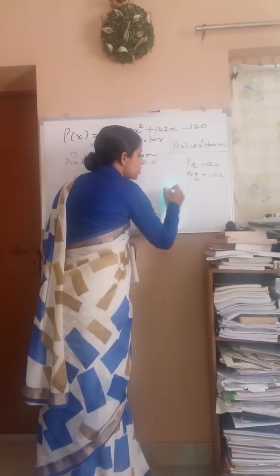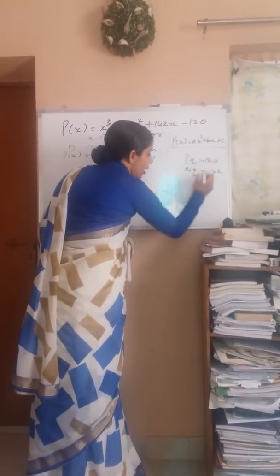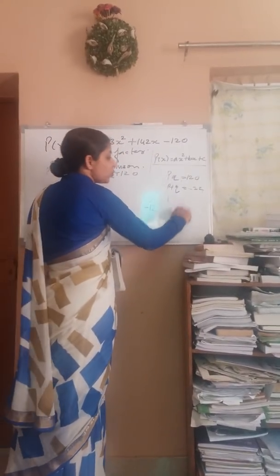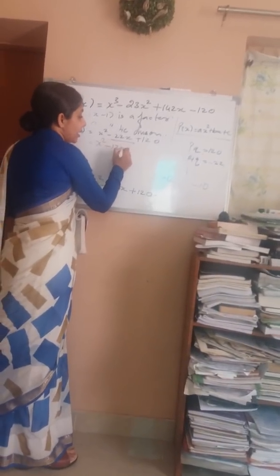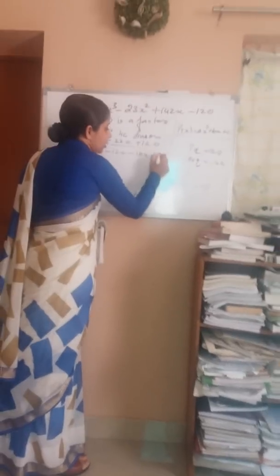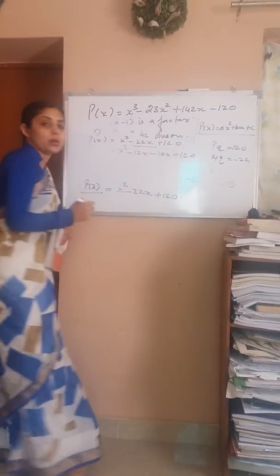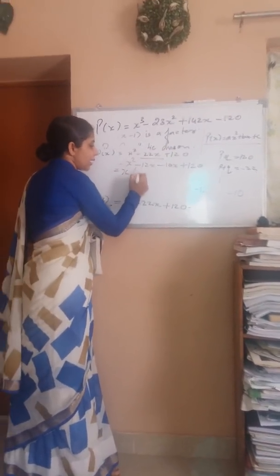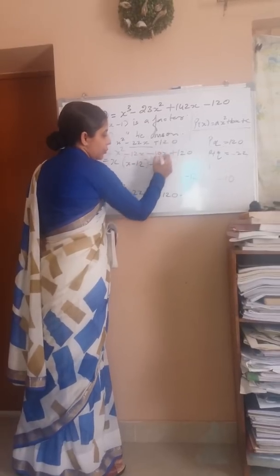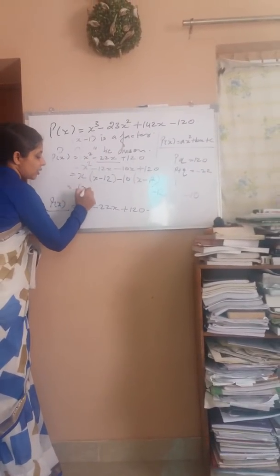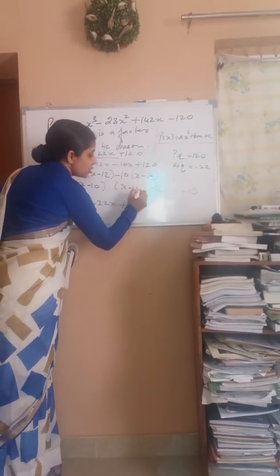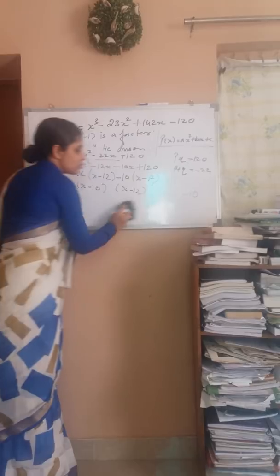Taking the two numbers as -12 and -10: adding them gives -22, and multiplying them gives 120 (since minus × minus = plus). So we split the middle term: x² - 12x - 10x + 120. Taking x common gives x(x - 12), and taking -10 common gives -10(x - 12). So the two factors are (x - 10) and (x - 12).